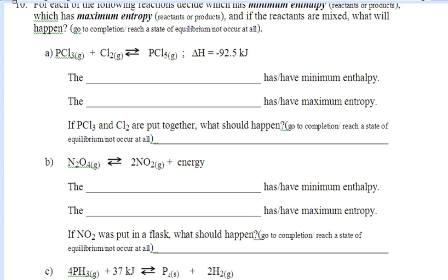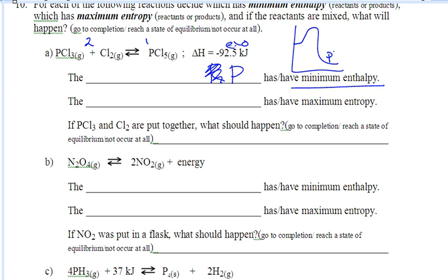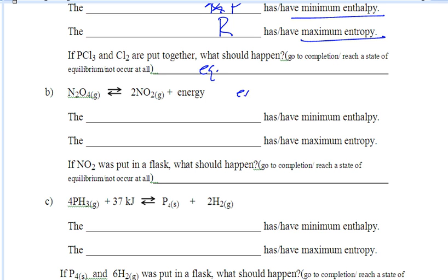Let's try a couple of examples. This first example is exothermic, which means the products have minimum heat. I've got two gases on the reactants side and one on the products side, so the reactants have maximum entropy. These tendencies are fighting each other — one favors products, one favors reactants — so you're going to reach a state of equilibrium. In the next example, it's exothermic, so the products have minimum enthalpy. There's one gas on the reactants side and two gases on the products side, so the products have maximum entropy — which means this is going to go to completion. Both tendencies are pushing this reaction to completion.